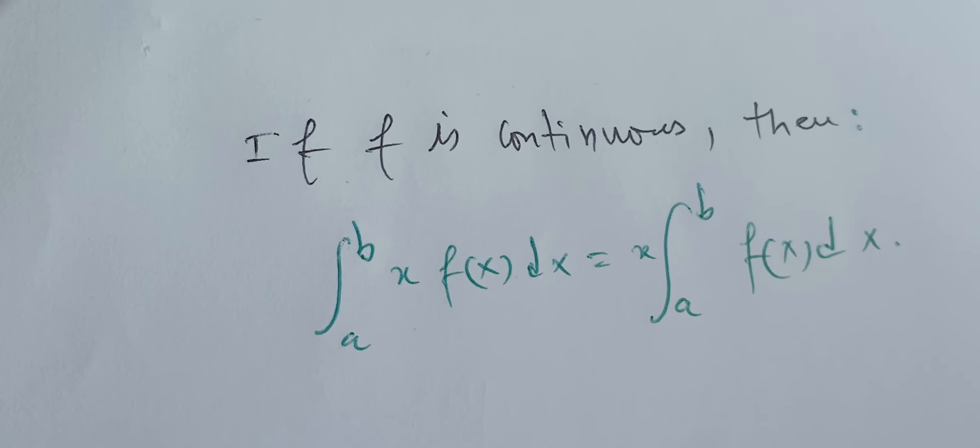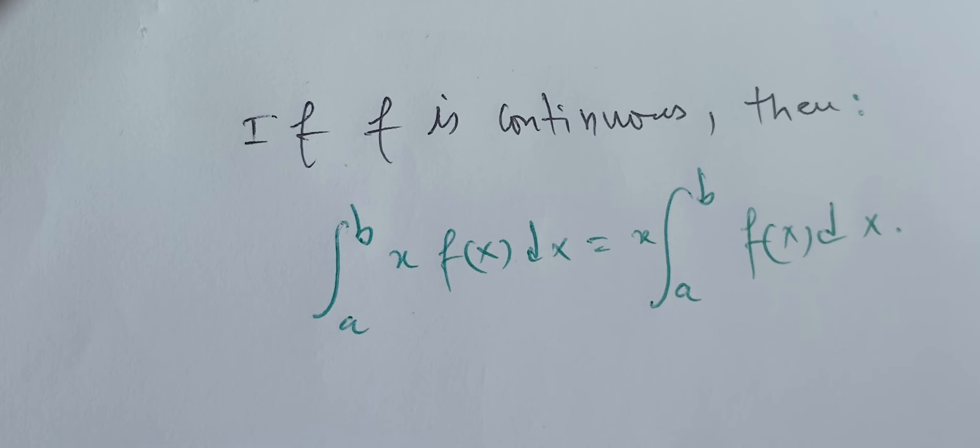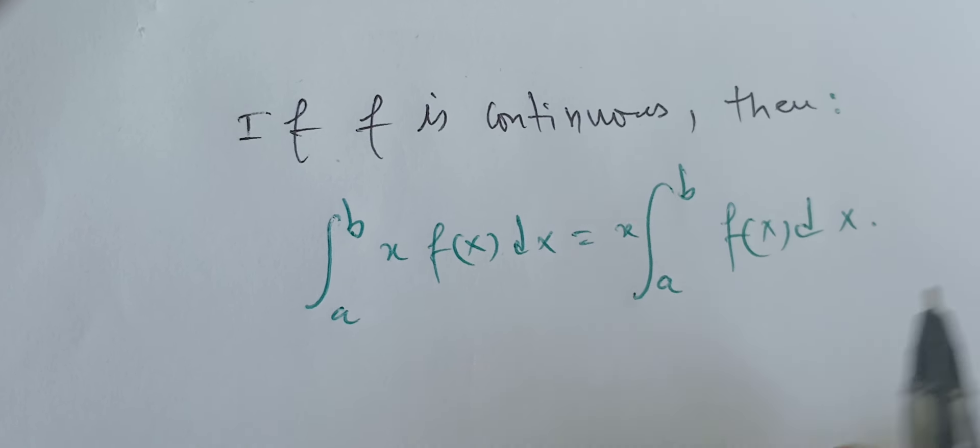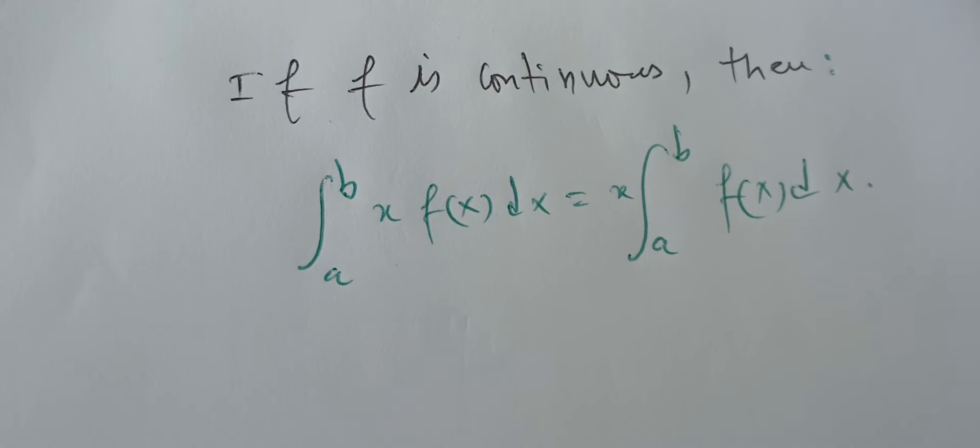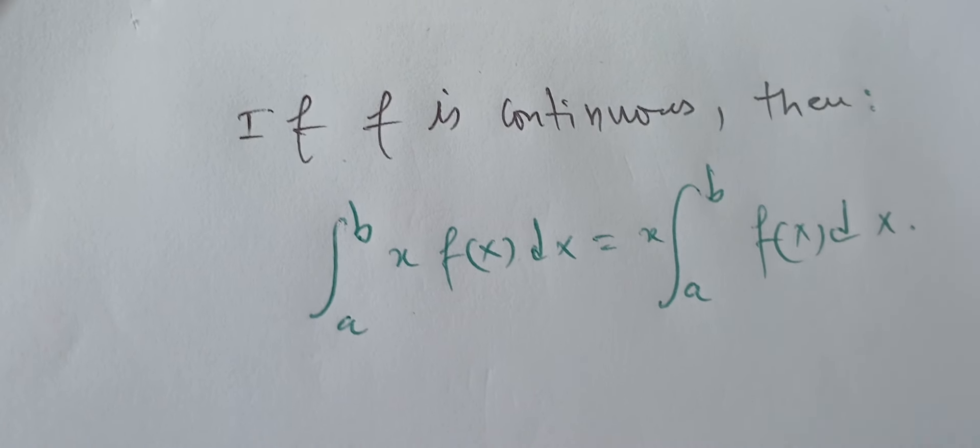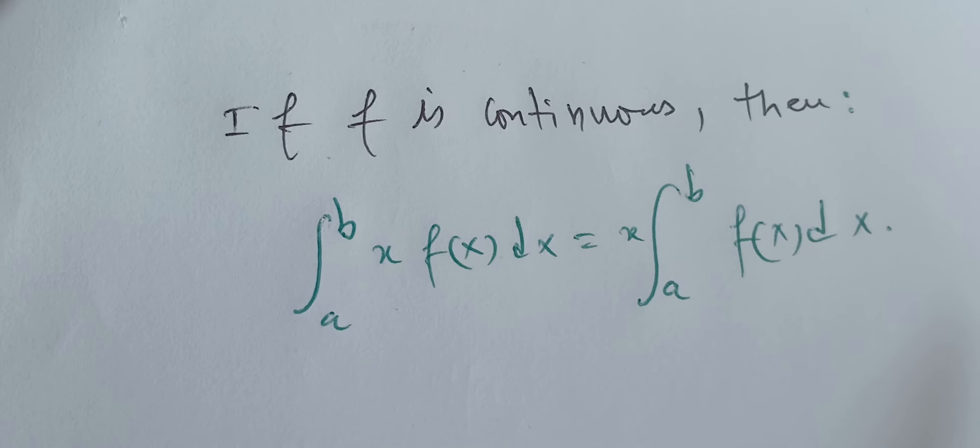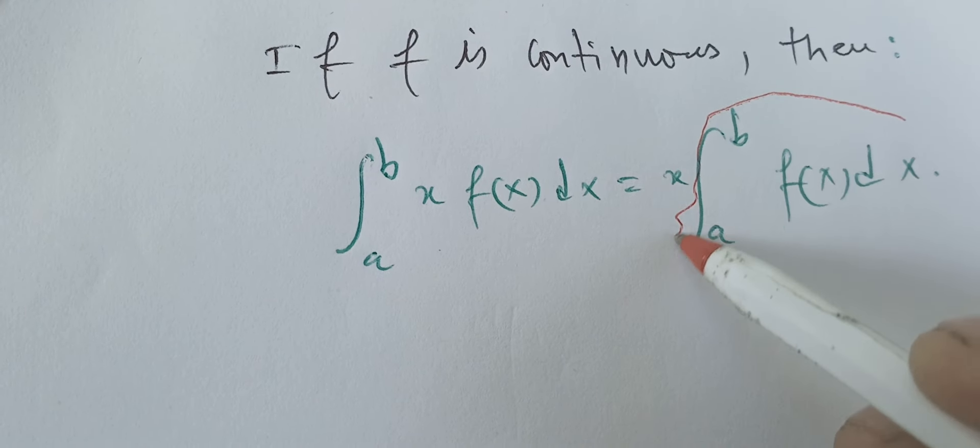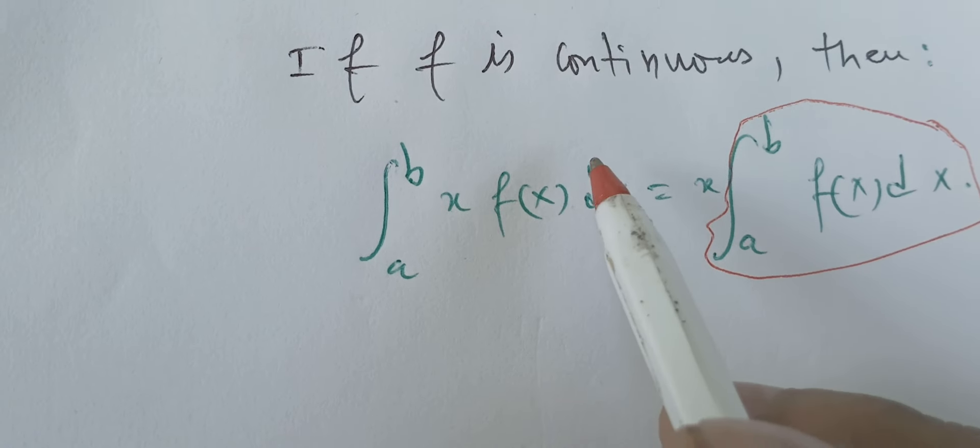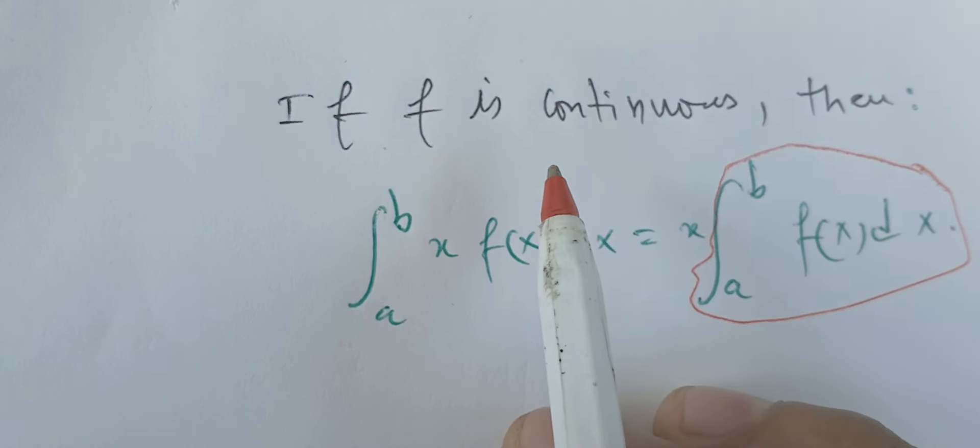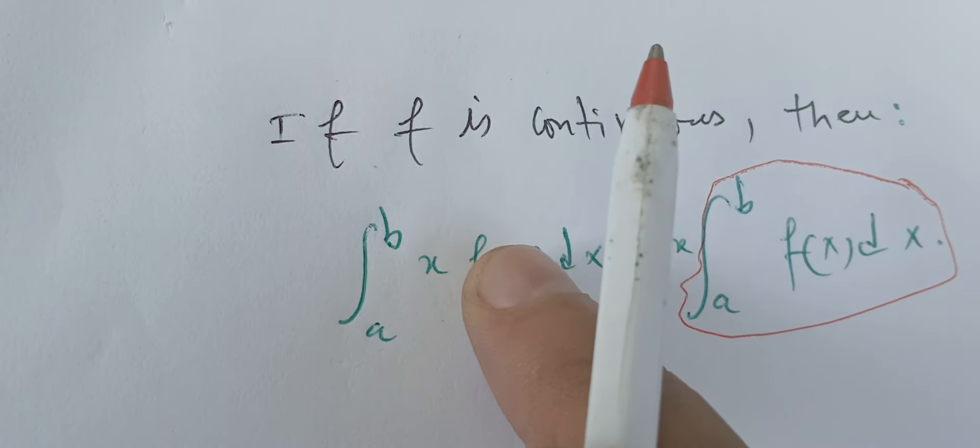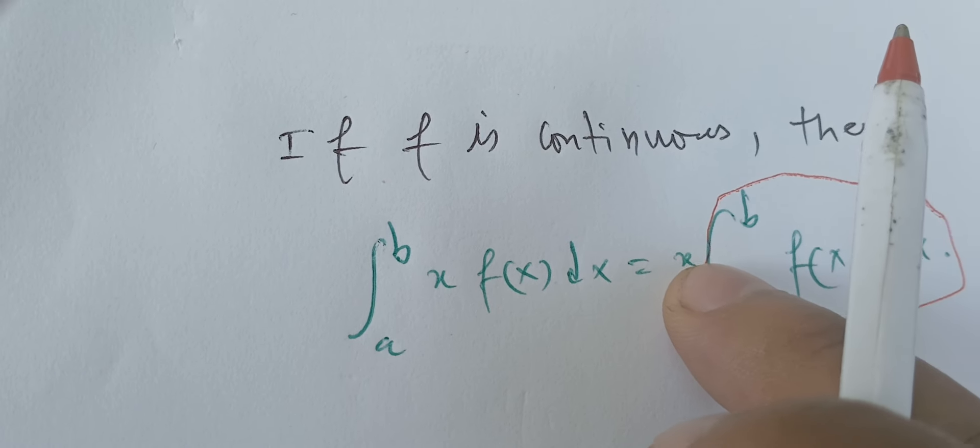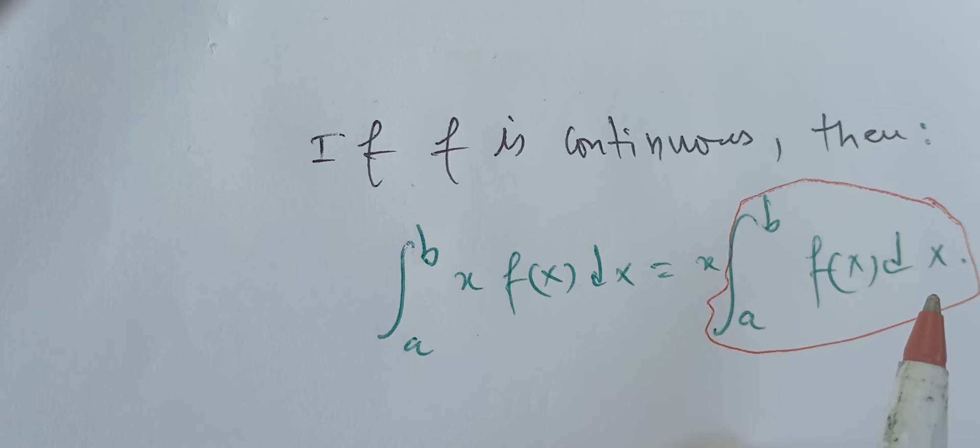Here we need to notice a few things before solving the problem. We see this one here is just a number, and this one on the left is a number. Therefore, we have a number times a variable times a number. Can that happen?